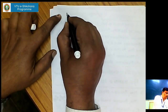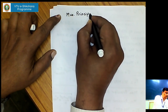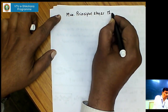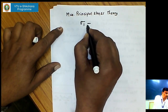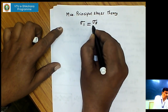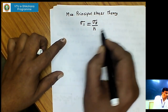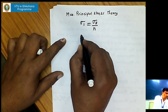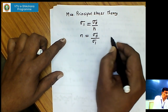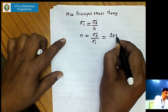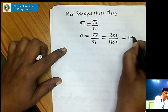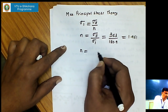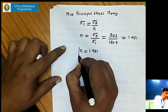Knowing these principal stresses, we can apply the failure condition according to maximum principal stress theory. The failure of the material occurs when the maximum principal stress equals the yield stress of the material divided by the factor of safety N. Substituting the values, N equals sigma_y divided by sigma 1, so N equals 353 divided by 180.9, which gives a factor of safety of 1.951. According to maximum principal stress theory, the factor of safety is 1.951.